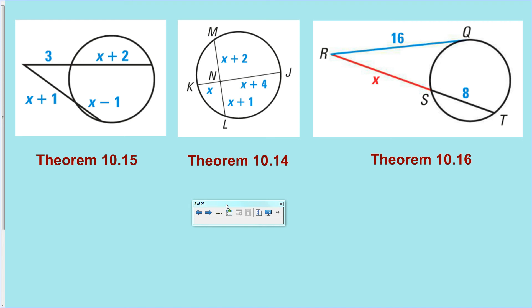Is the intersection outside the circle? Is the intersection inside the circle? Is the intersection on the circle? So, 10.14 deals with the intersection being inside the circle with segment lengths. 10.15, intersection outside the circle with segment lengths and two secant lines. Theorem 10.16 talks about a tangent line and a secant line with the intersection outside the circle.